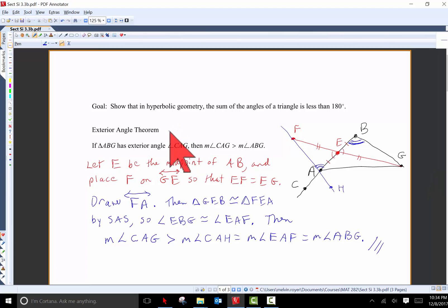First result, the exterior angle theorem is a result in both Euclidean and hyperbolic geometry. We start with the black triangle and angle CAG is an exterior angle to this triangle, whereas angle ABG is an interior angle to the triangle. The content of the theorem is that the exterior angle here is greater than the interior angle here. This exterior angle would also be greater than this interior angle, but we'll just prove one of these.